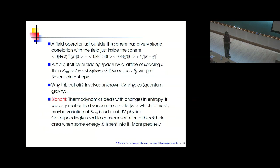The question is: why do you use this cutoff? The Planck length characterizes quantum gravity, and presumably quantum gravity regulates this calculation and gives this answer. But supposing one didn't want to appeal to quantum gravity at all — can one still establish a relationship between entanglement entropy and black hole area change?